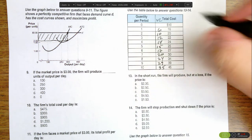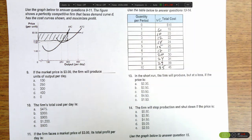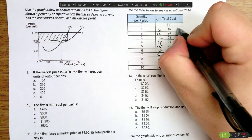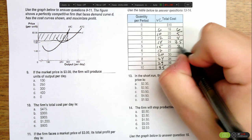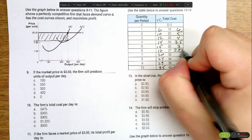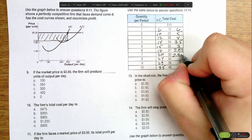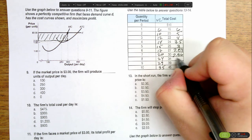If we figure out the average variable cost, we take this number divided by the quantity. And if you do that, you're going to get $6, $5, $4, $3.50, $3, $2.83, $2.86, $3, $3.22, and $3.50.